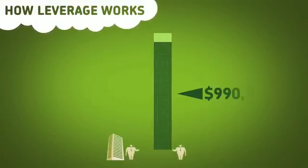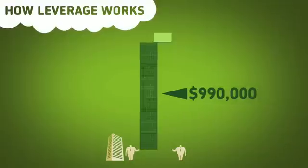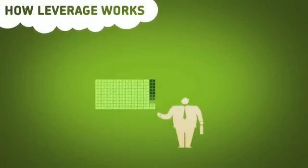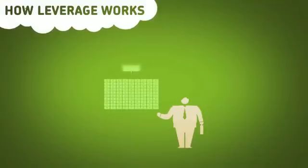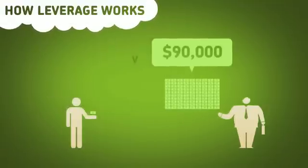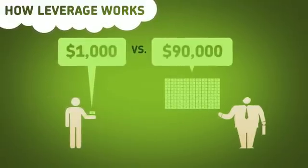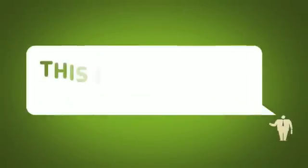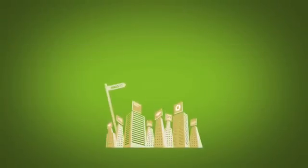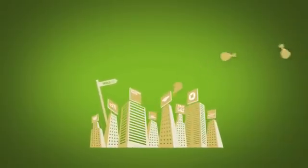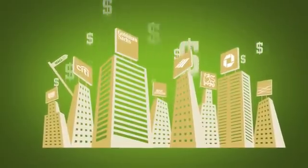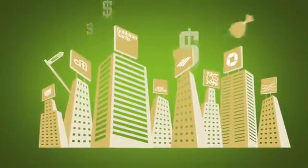Then he pays back his $990,000 plus $10,000 in interest. And after his initial $10,000, he's left with a $90,000 profit versus the other guy's $1,000. Leverage turns good deals into great deals. This is a major way banks make their money. So Wall Street takes out a ton of credit, makes great deals, and grows tremendously rich. And then pays it back.